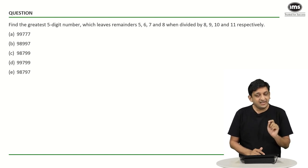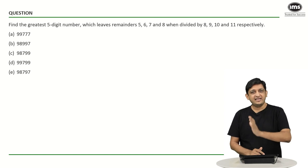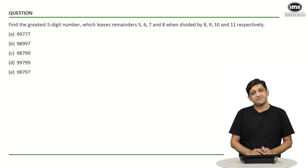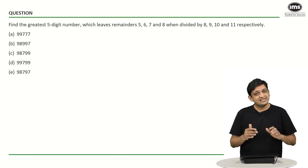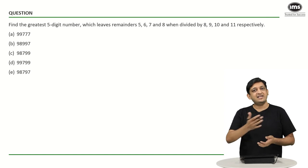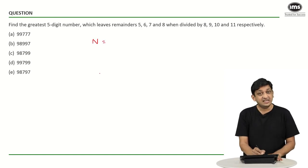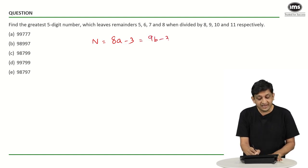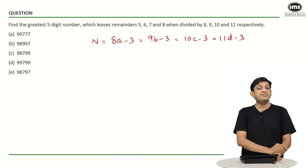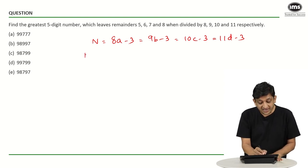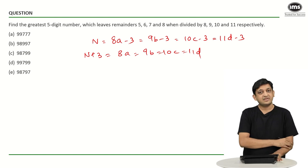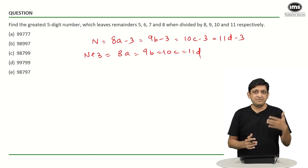You can say that the remainder when you divide this number by 8, 9, 10, and 11 will be minus 3 in each case, because a positive remainder of 5 when dividing by 8 is the same as a negative remainder of minus 3. That is a concept you have to understand. So this number n can be represented as 8a minus 3, also as 9b minus 3, as 10c minus 3, and as 11d minus 3. If you write n plus 3, it will be a multiple of 8, 9, 10, and 11 — and that is how you get the formula.